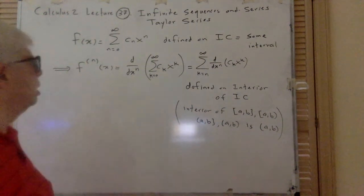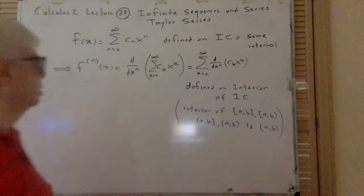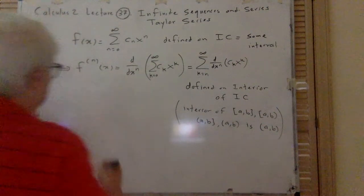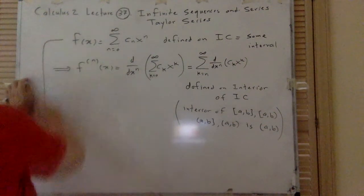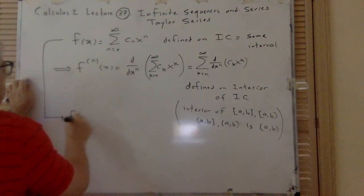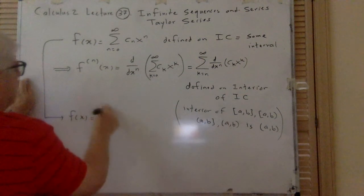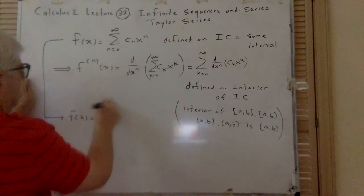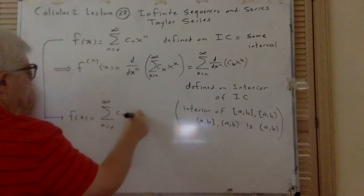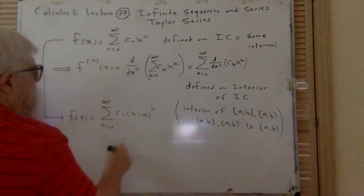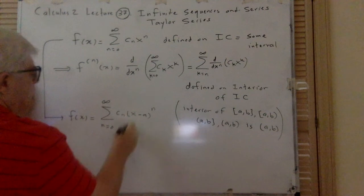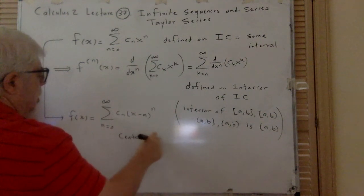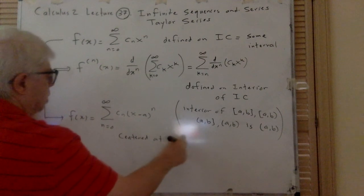So let's see what we can get out of this. First of all, this function is defined like this. We can have this power series in the form of C_n times (x minus A) to the power n, and we said the center for this one is at x equals A.